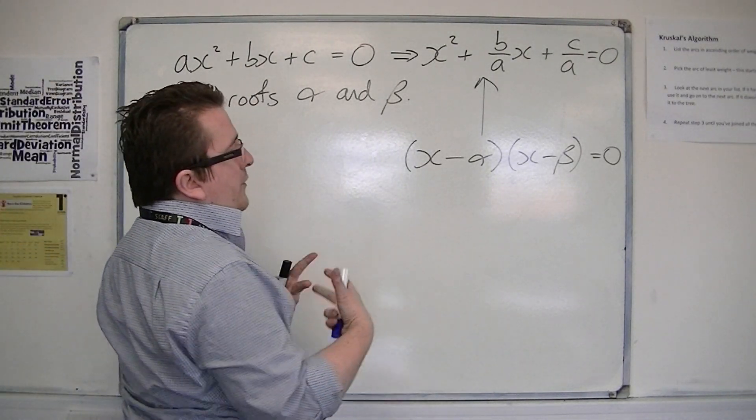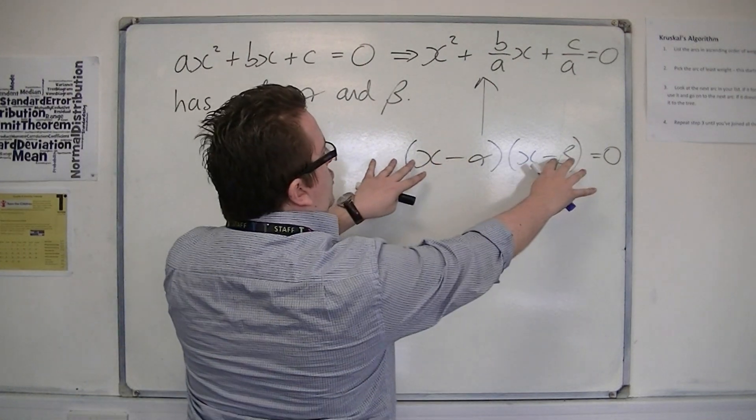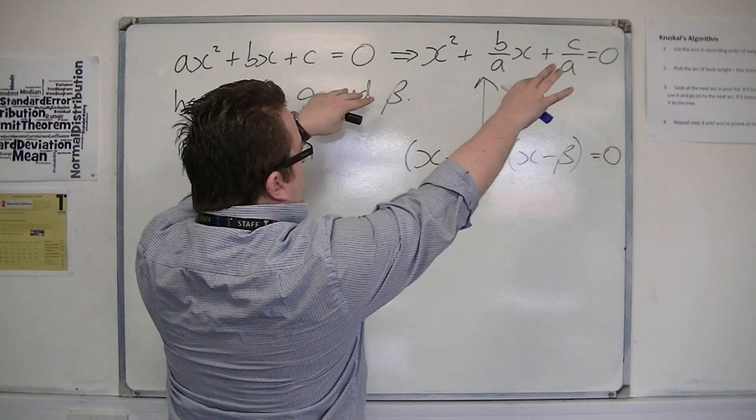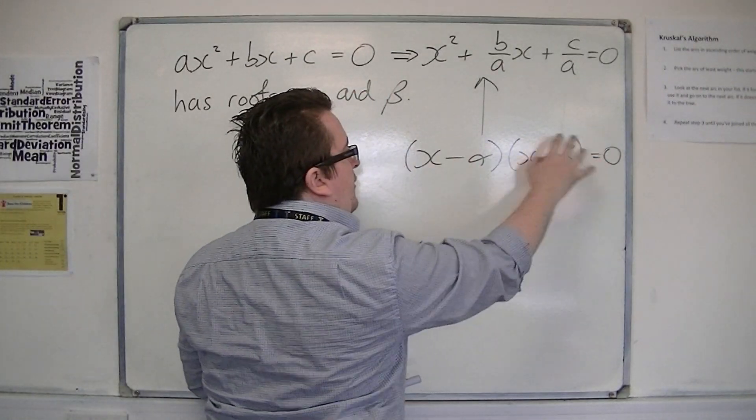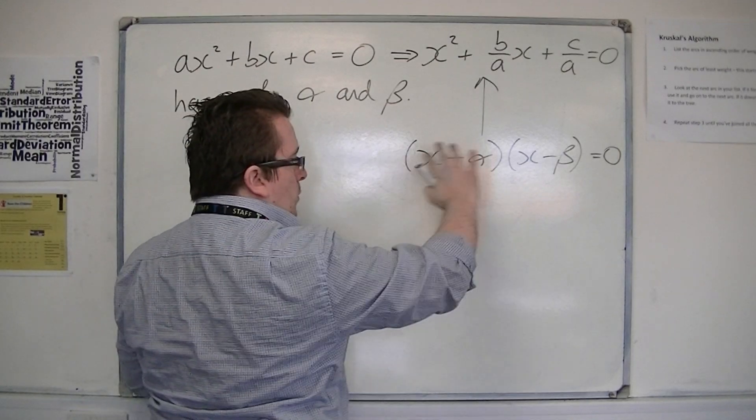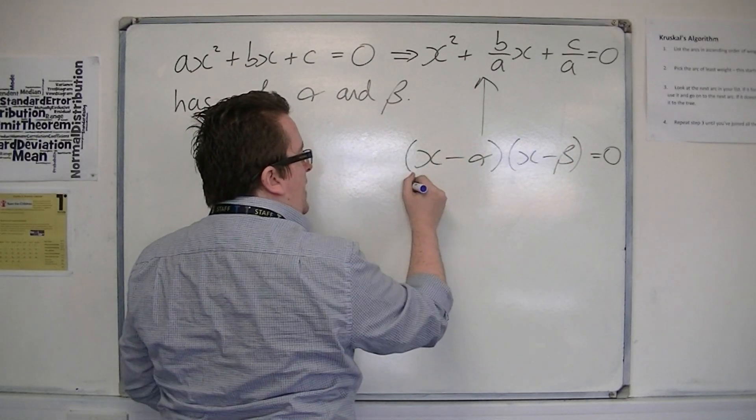So, what I want to do is make a comparison between this equation and this equation and see what's the same. So, if you expand that equation out, the double brackets, we're going to get x times x is x²,